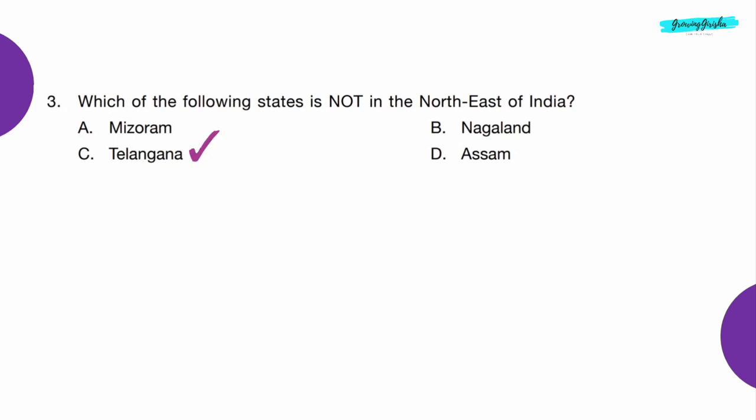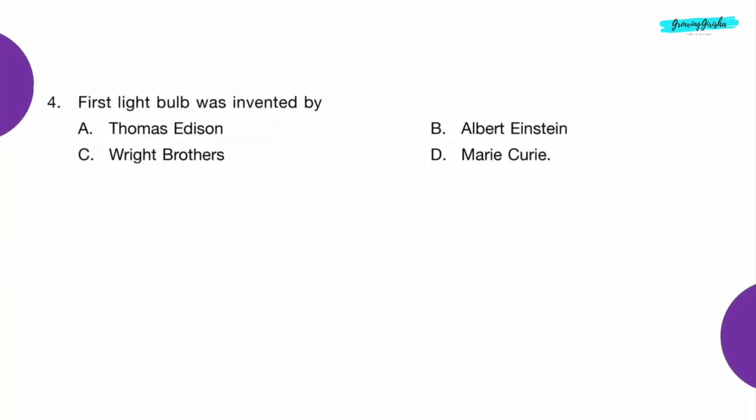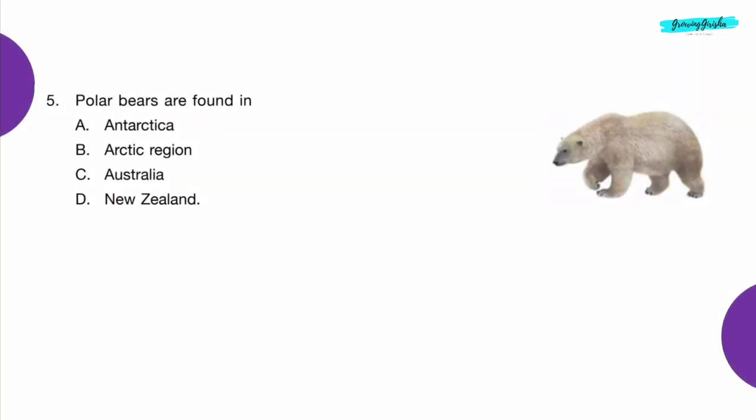Telangana. Question 4: First light bulb was invented by? Option A — Thomas Edison.